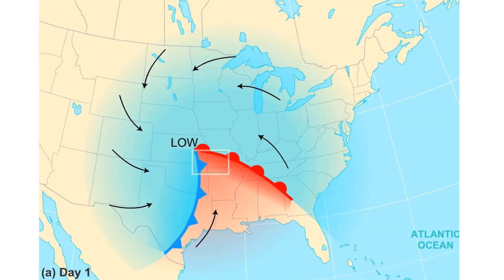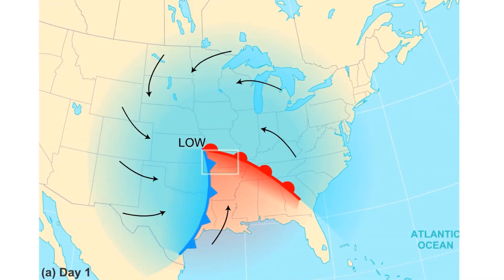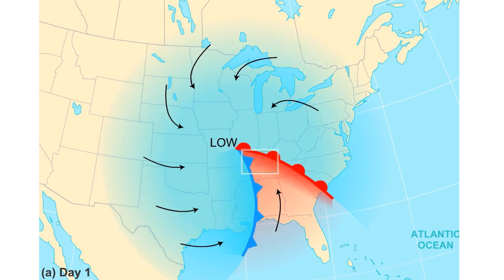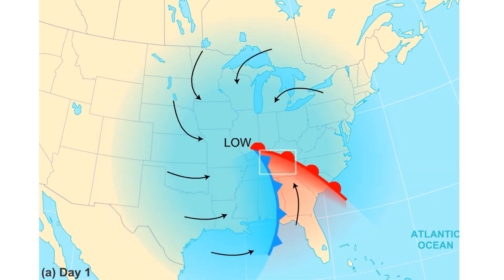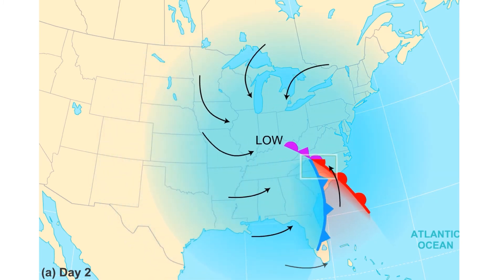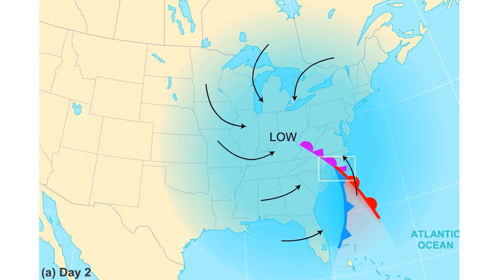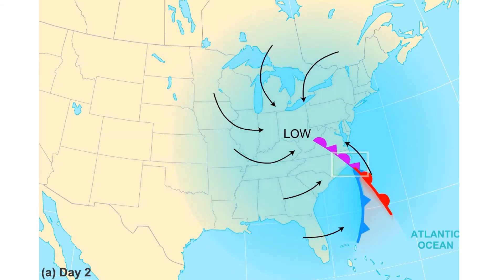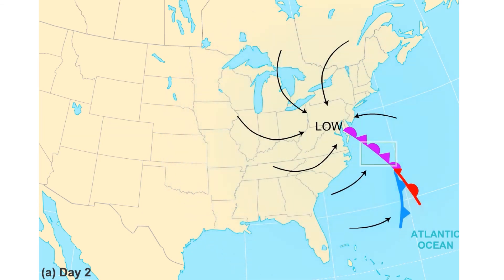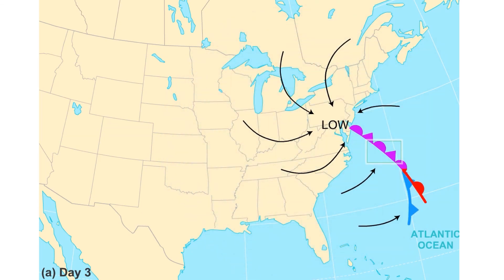As we can see here, the entire cyclone moves east while rotating counterclockwise. The faster-moving continental polar air mass overtakes the maritime tropical air mass, creating an occluded front.